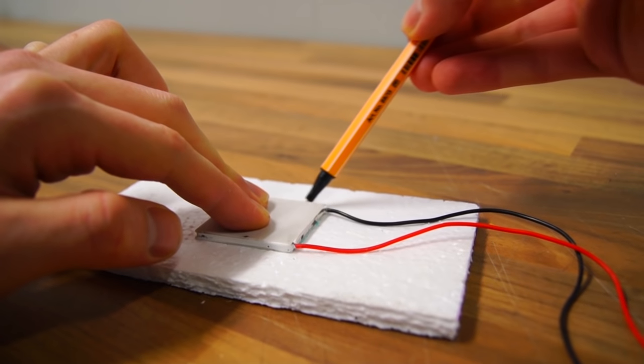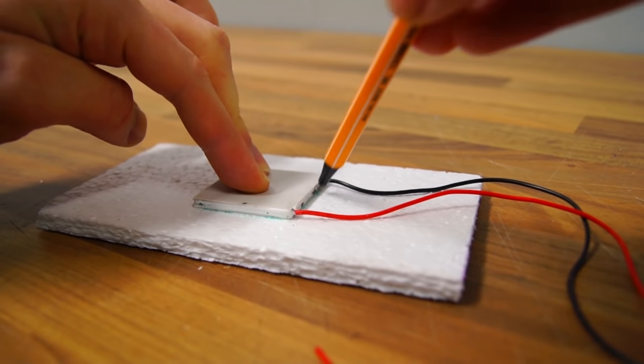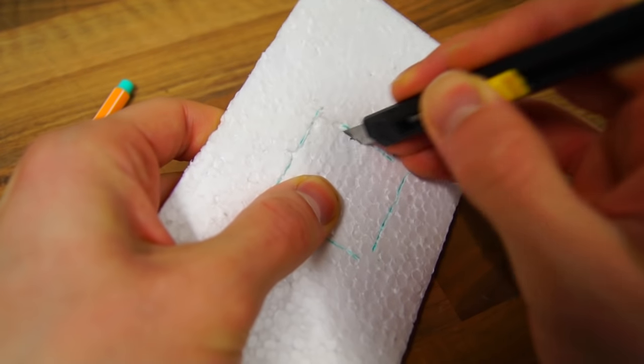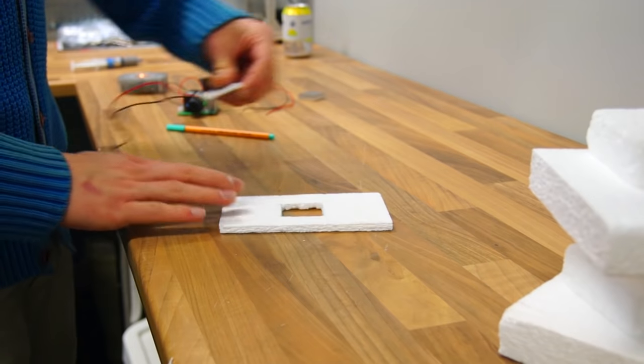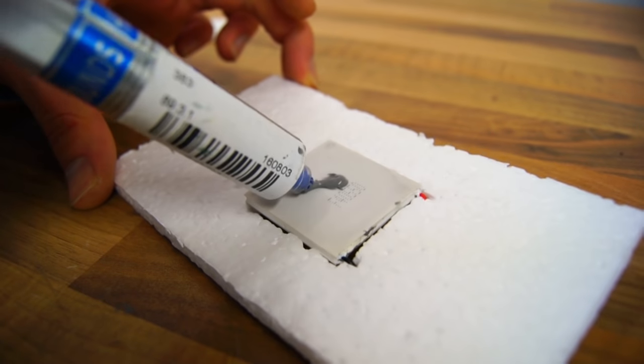I placed the Peltier module in the center of the sliced part and marked out the cutting lines, squeezed it in and added a small amount of thermal compound on the cold side.